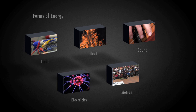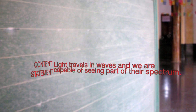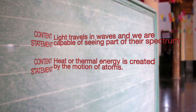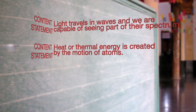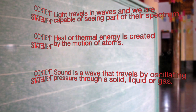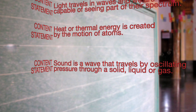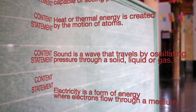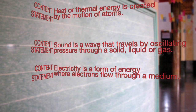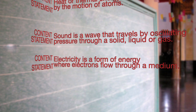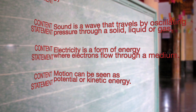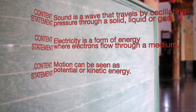Now that you have seen different types of energy, let's go over a few content statements. Light travels in waves and we are capable of seeing part of their spectrum. Heat, or thermal energy, is created by the motion of atoms. Sound is a wave that travels by oscillating pressure through a solid, liquid, or gas. Electricity is a form of energy where electrons flow through a medium. Motion can be seen as potential or kinetic energy.